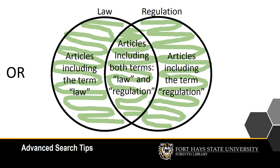When you use OR to connect your search keywords, the database or catalog will provide results that include either of your keywords by themselves, as well as results that include both of them together. OR lets you broaden your search by including synonyms or related concepts.